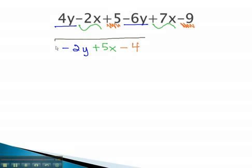And that completes this problem. We cannot combine the negative 2, 5, and negative 4, because they are not like terms. The variables do not match. This is our solution.